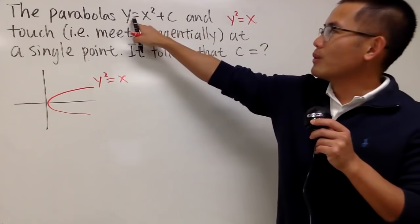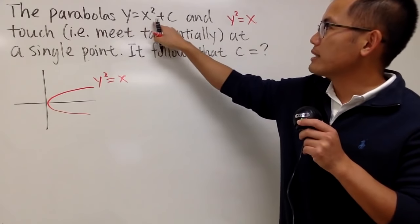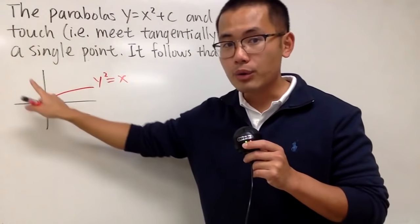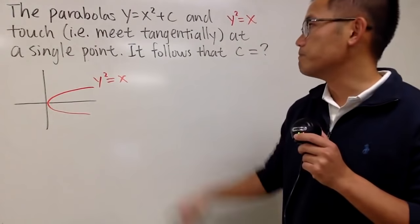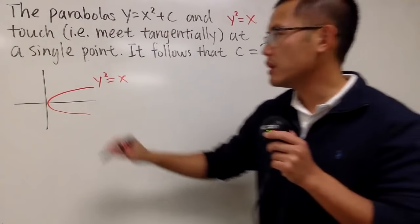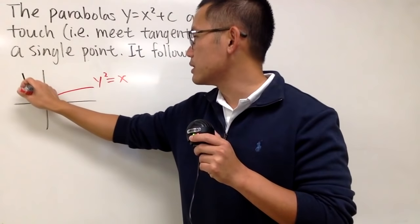But now we know when we have y equals x squared plus c, this is the parabola either up here or down here, right? Open up. Because we have this right here already, that means c has to be positive. That means the picture should look like this.